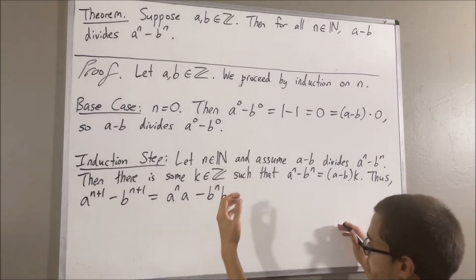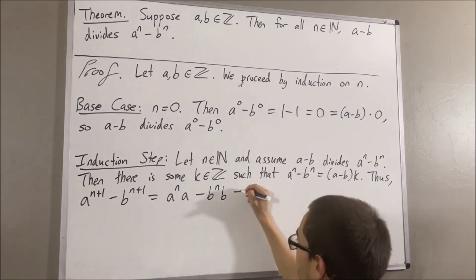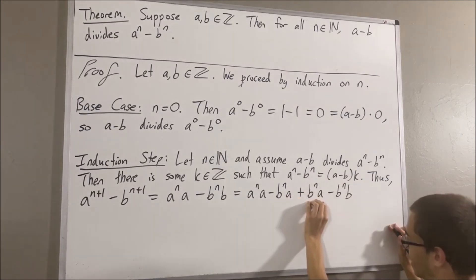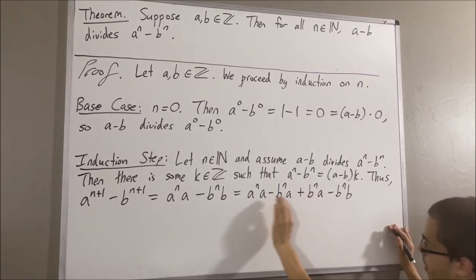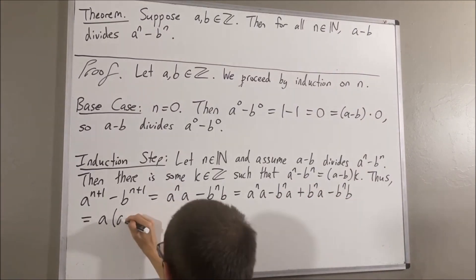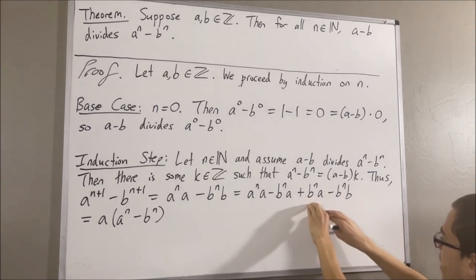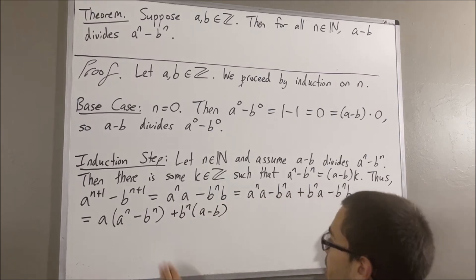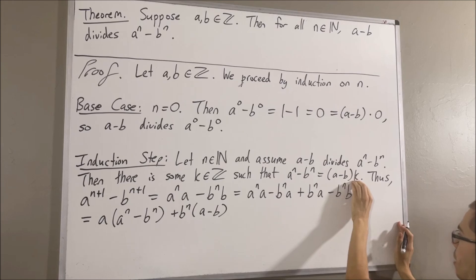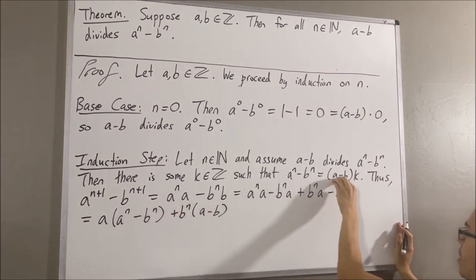From here, we're going to subtract and add B to the n times A. As you can see, we subtracted and added B to the n times A. From the first two terms, we can factor out an A, and from the last two terms, we can factor out a B to the n. We know that A to the n minus B to the n is equal to A minus B times k, so we're going to substitute A to the n minus B to the n for A minus B times k.